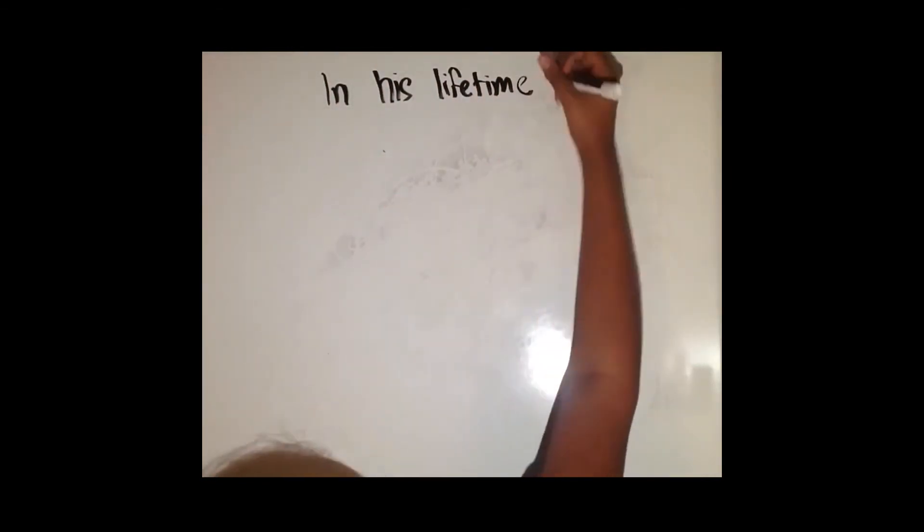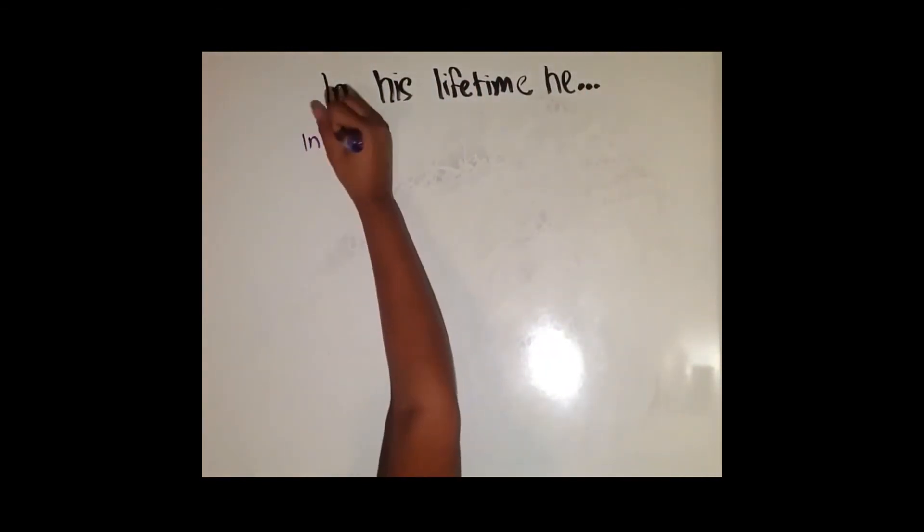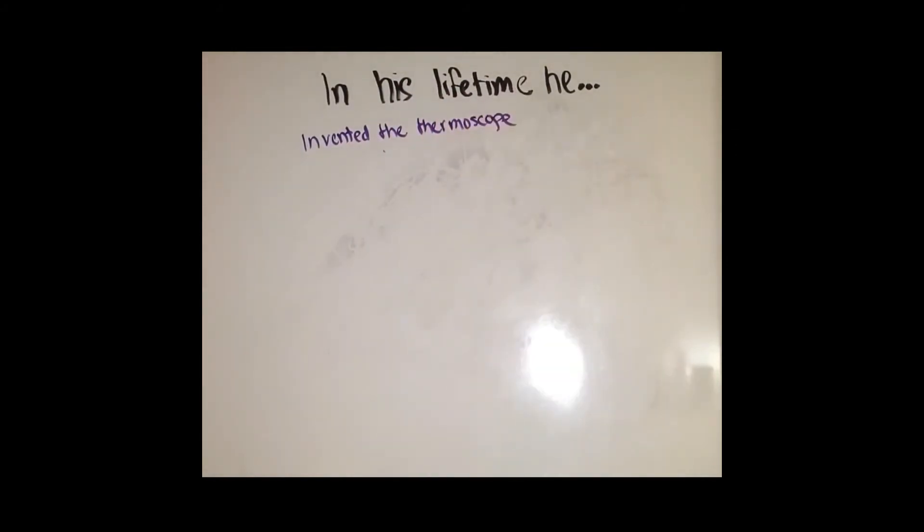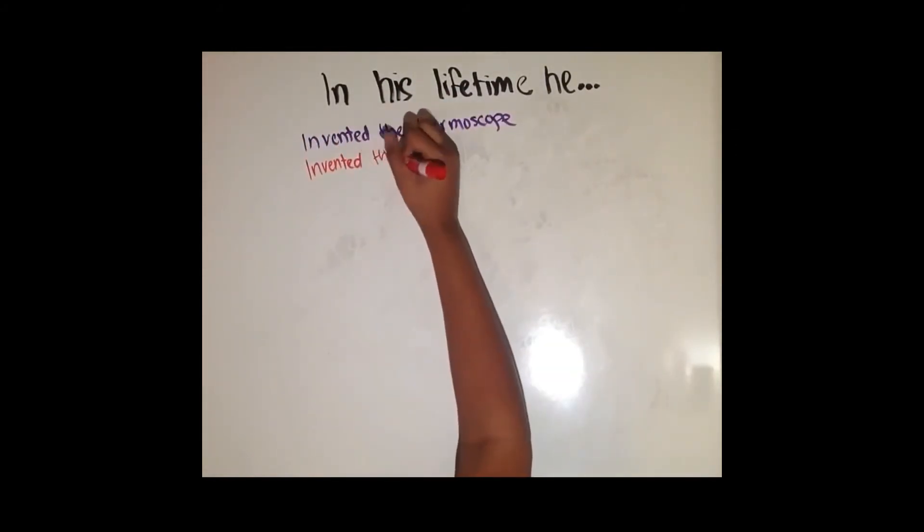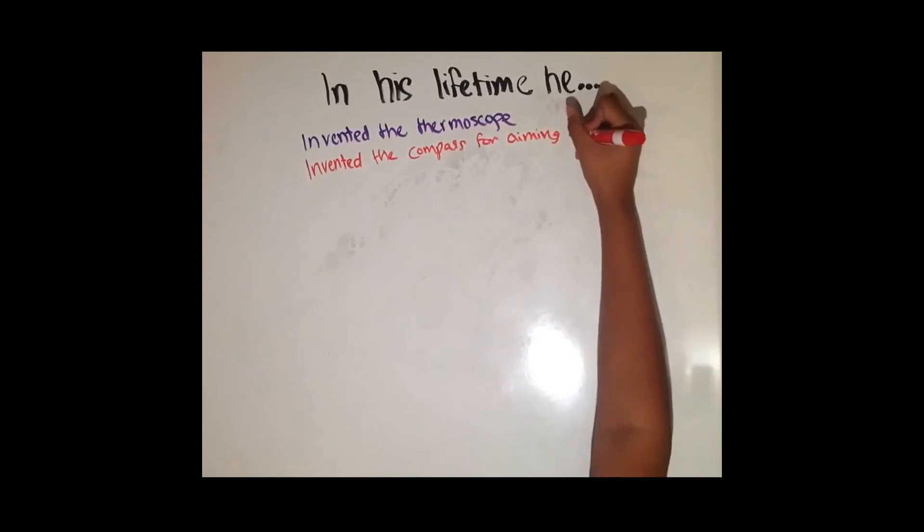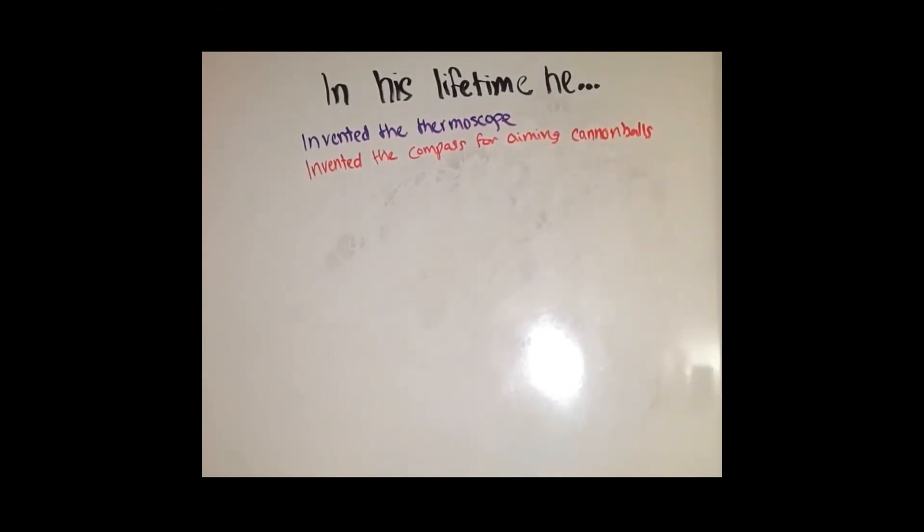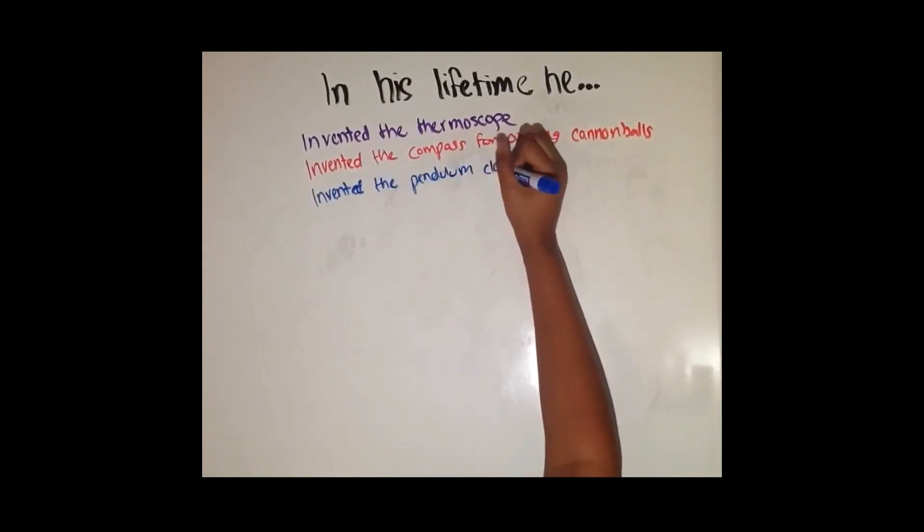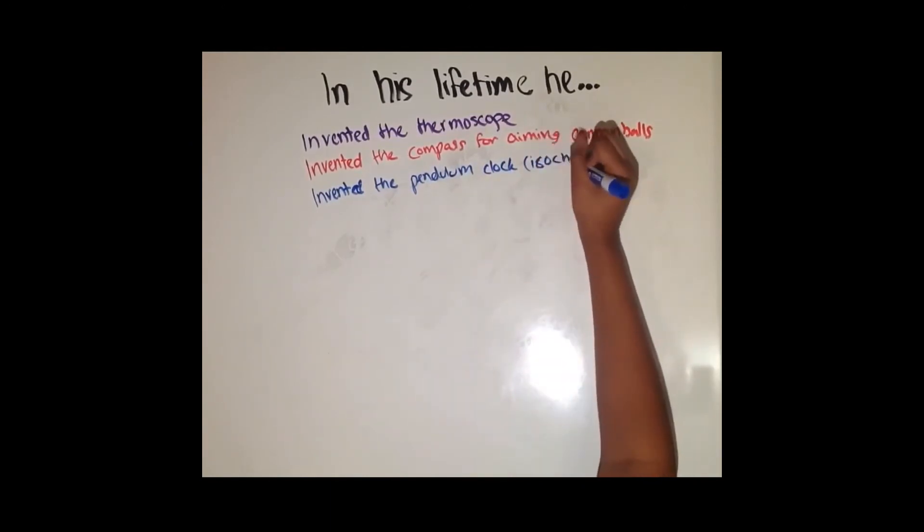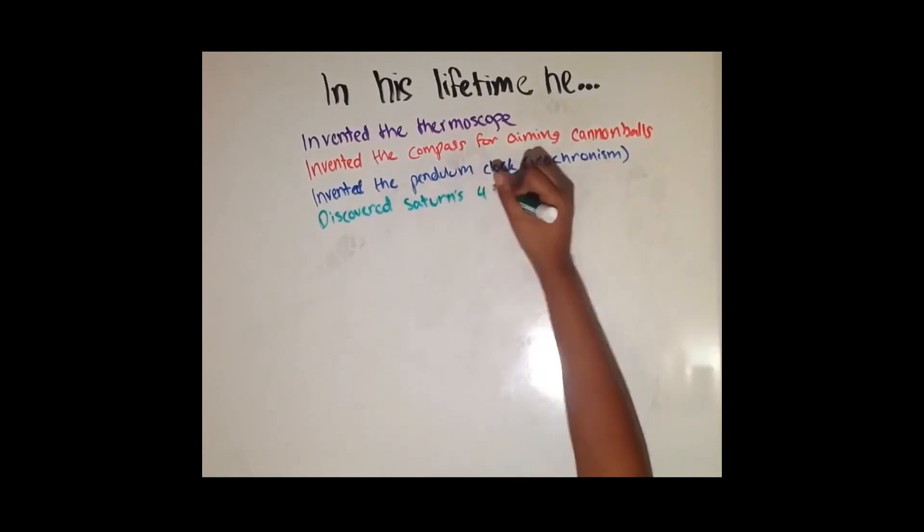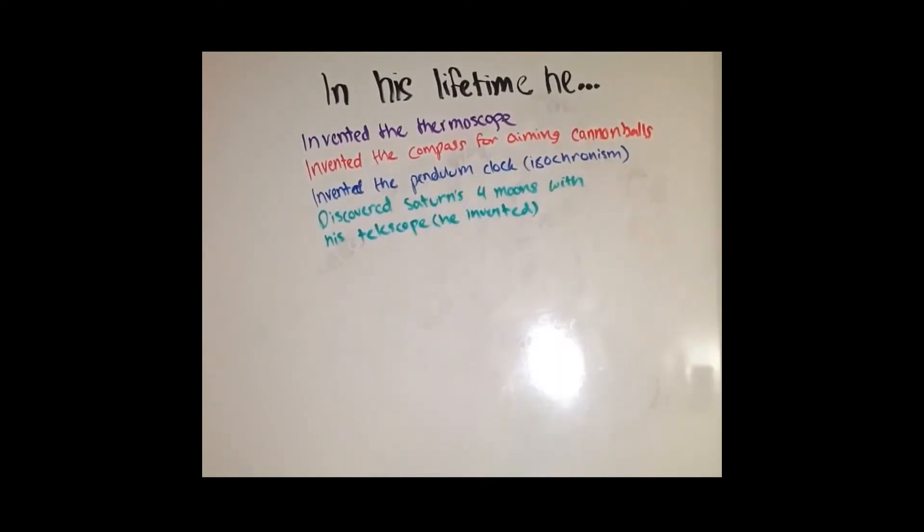In his lifetime, he invented the thermoscope. He also invented the compass for aiming cannonballs. He also uses isochronism to make the pendulum clock. He discovered Saturn's four moons, which were soon named after him, with the telescope he invented.